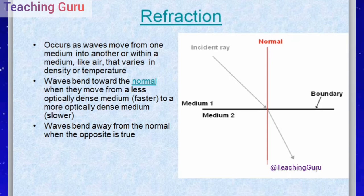When the ray moves from a rarer medium to a denser medium, it bends toward the normal — you can see this in the diagram. When it moves from a denser medium to a rarer medium, it goes away from the normal. Waves bend away from the normal when the opposite is true.